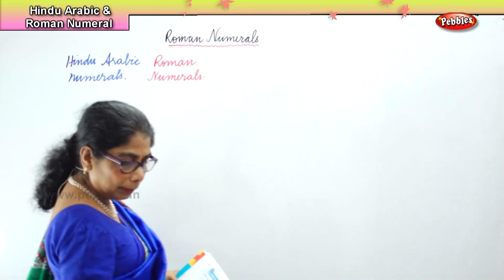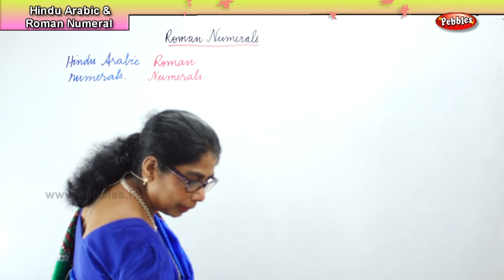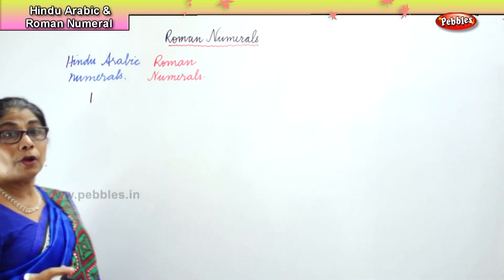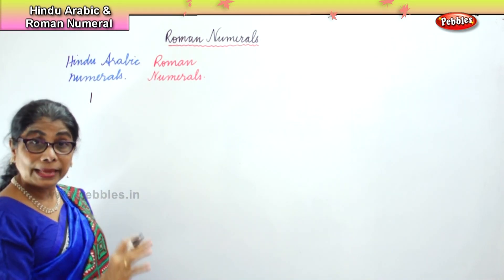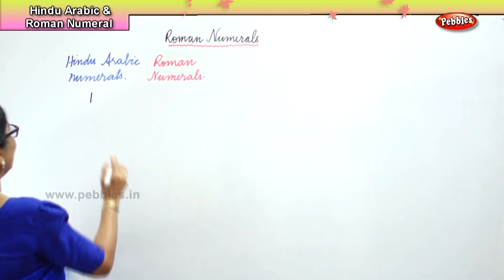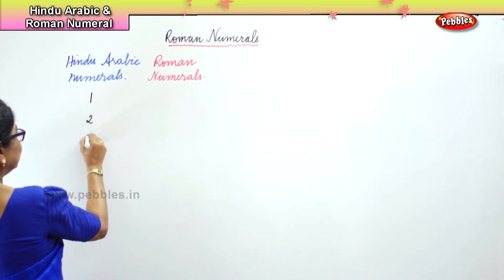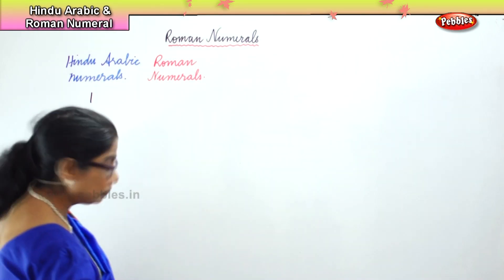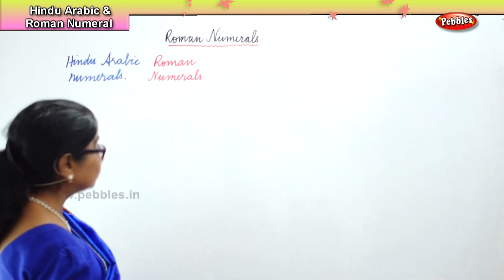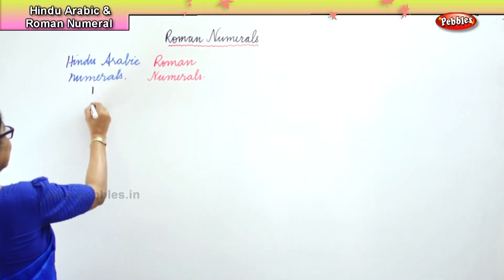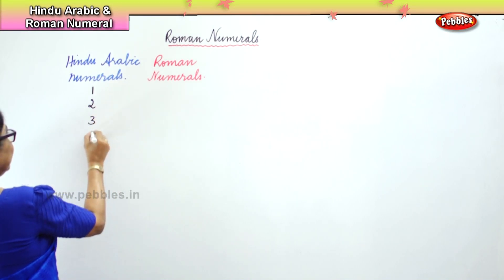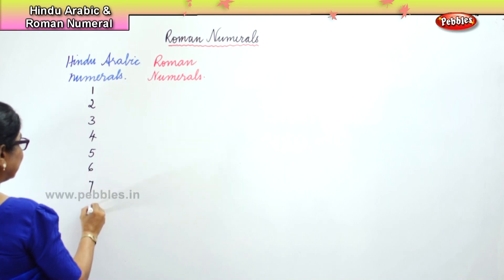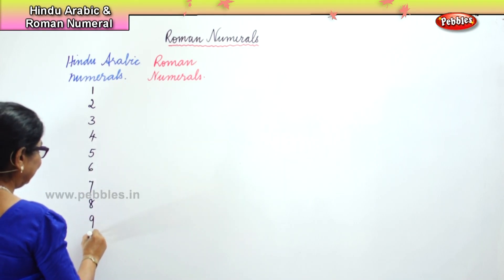You're going to build on Hindu-Arabic and Roman numeral together. So first I will write one to ten. One, two, three, four, five, six, seven, eight, nine and ten. That's what we are going to do, and then at the side we will write the Roman numerals.